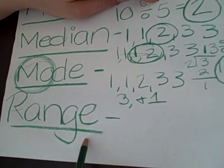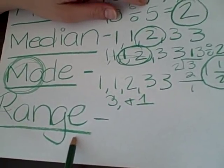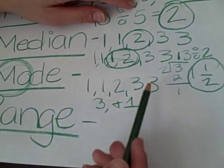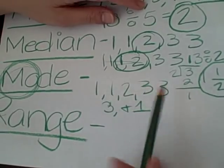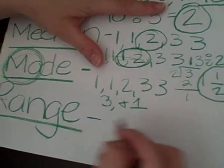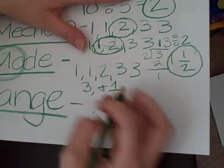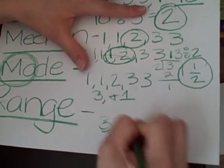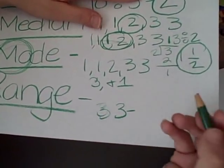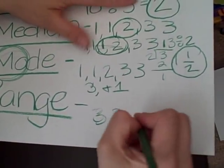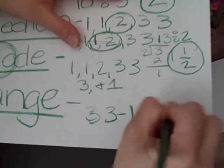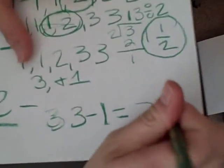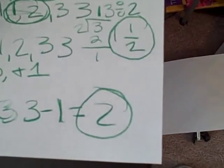Now, your range — you're going to subtract your smallest number from your biggest number. So the range of this would be three minus one, which is two. So your range is two.